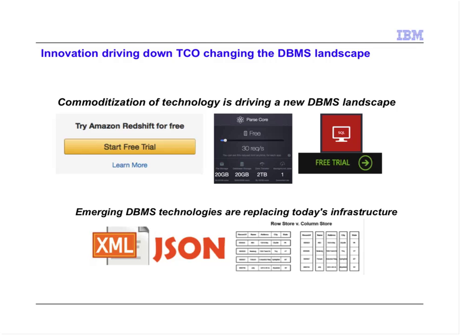With commoditization also comes a decrease in cost. Now you can jump into the web, find a database, and leverage a free service right out of the box. Redshift allows you to get one month of free access. Parse lets you do a trial. Microsoft offers a free level of service so you can go and try your wares, POC something, and essentially get the job done and work with your data.